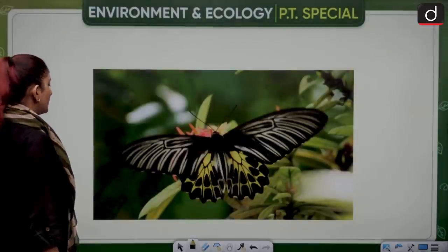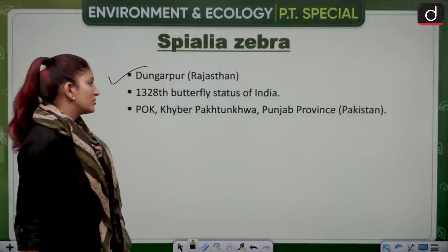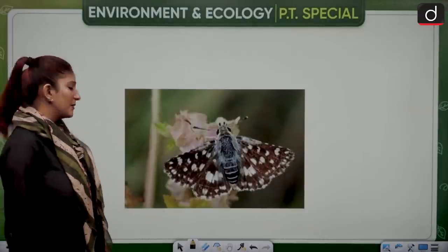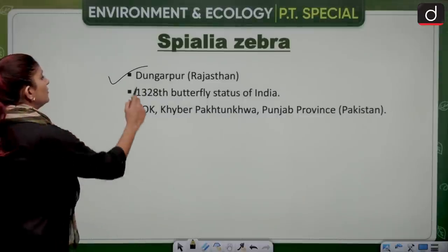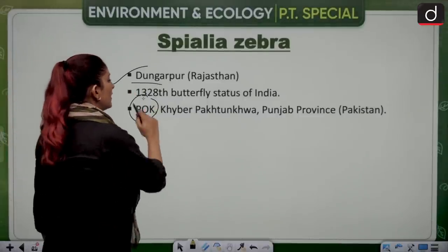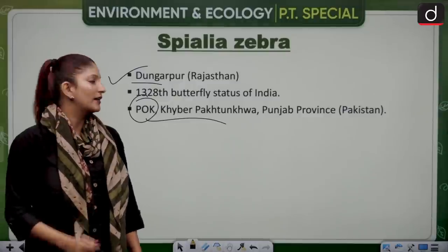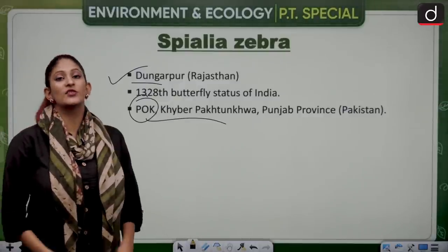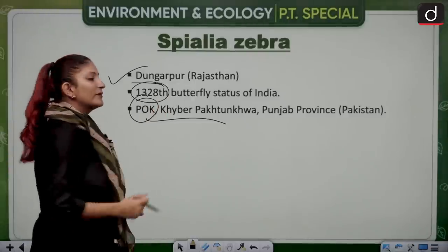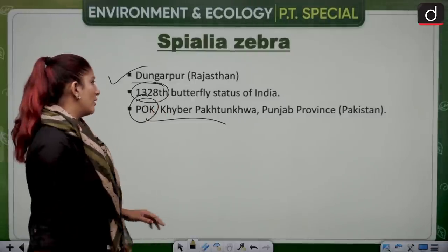Spialia zebra is also a butterfly. It is found in the Dungarpur region of Rajasthan, also in Pakistan-occupied Kashmir, Khyber Pakhtunkhwa, and the Punjab province of Pakistan. It is designated as the 1328th butterfly of India.